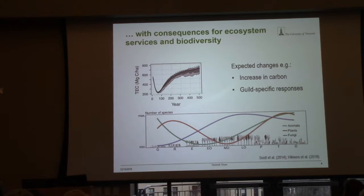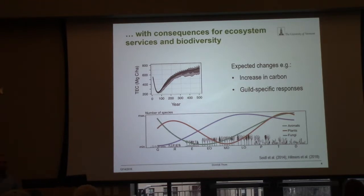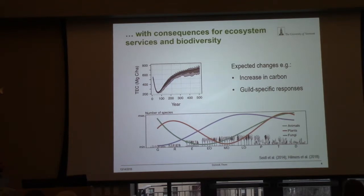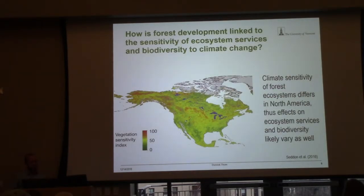Here is an example of a simulation study for total ecosystem carbon after stand-replacing disturbance. First of all, carbon goes down initially — the above-ground carbon will be gone — but then the soils and forest floor carbon has a lagged effect, and then carbon stocks would recover again. For species diversity, it's not that clear; this is a study from Europe, and it depends a lot on the guilds you are projecting. But at least there are some trends that say old-growth forests have quite high diversity overall. So a big question is: how is forest development linked to the sensitivity of ecosystem services and biodiversity and climate change?